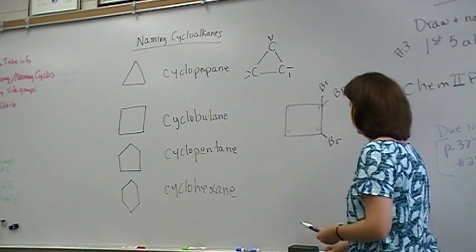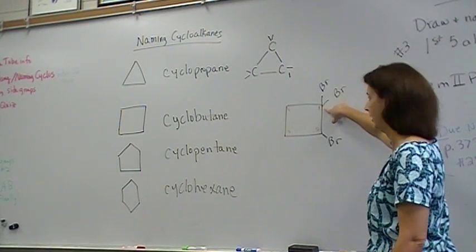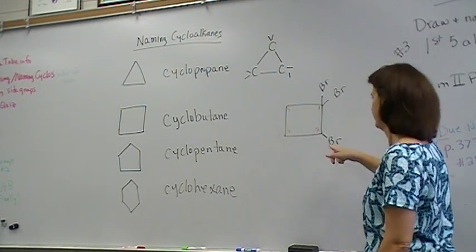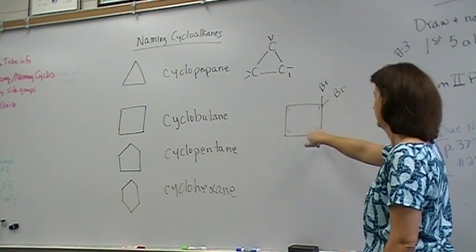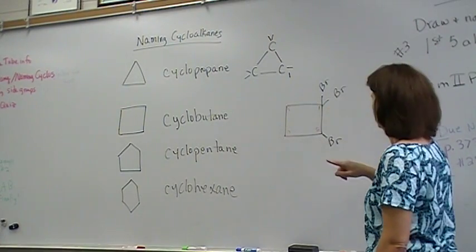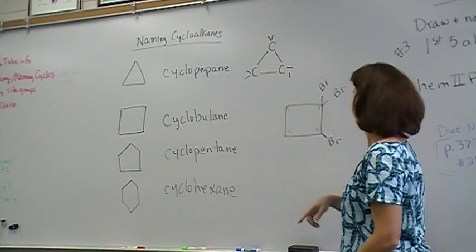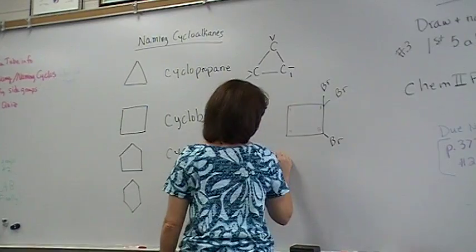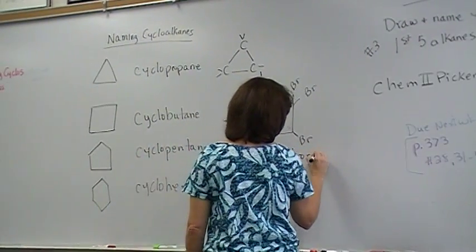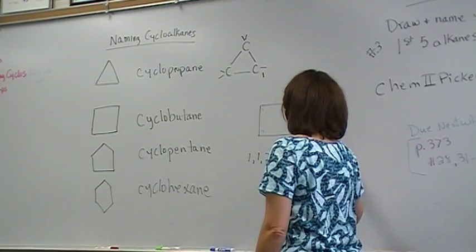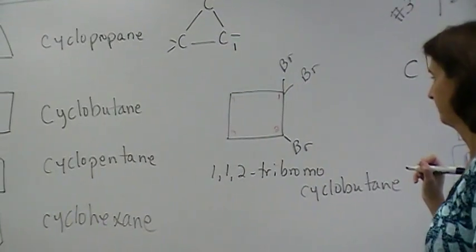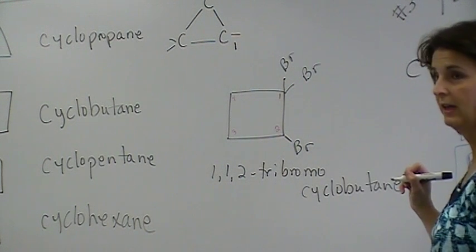If I start with number one right here, I'm going to get like a 1, 1, 2, 4. If I started here, I would get a 1, 2, 2, which is 5. If I started over here, I'd get even bigger numbers. So my answer to this is going to be 1, 1, 2-tribromo cyclobutane.